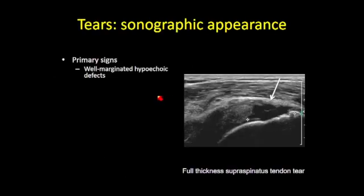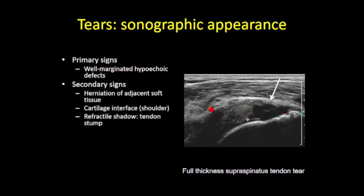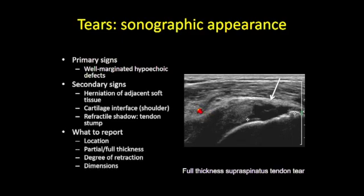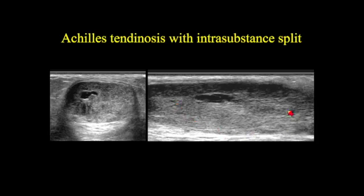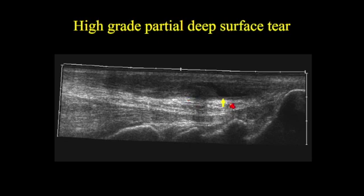Turning to tears: the primary sign is a discretely marginated hypoechoic abnormality within a diffusely abnormal tendon. When you identify a tear, you should report its location, extent, and dimensions. Here we see a tendinotic Achilles tendon with a discretely marginated hypoechoic defect entirely within the substance — an intrasubstance tear. This high-grade partial-thickness tear along the deep surface of the Achilles tendon is in the so-called critical zone of diminished vascularity, a typical location for partial-thickness tearing.